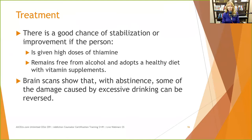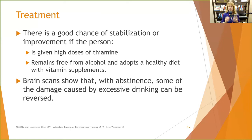There's a good chance of stabilization or improvement if the person is given high doses of thiamine, remains free from alcohol, and adopts a healthy diet with vitamin supplements. Brain scans show that with abstinence, some damage caused by excessive drinking can be reversed. The chances of going from unable to live independently to living independently are small but not unheard of, and there are likely to be improvements as the fog clears.